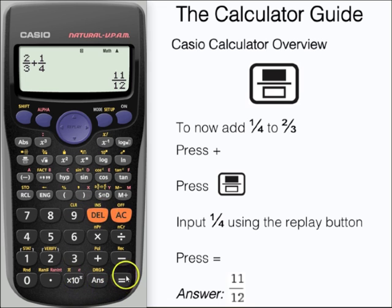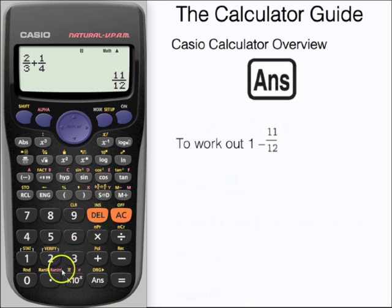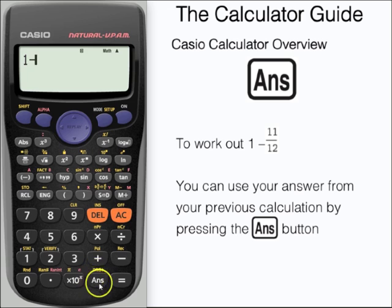We're going to use our answer from this particular calculation in our next calculation. We've got eleven-twelfths stored here in our answer bank. We're going to work out one minus eleven-twelfths but rather than type in eleven-twelfths we're going to use the answer button located here which will use our answer from our previous calculation. Press equals and that should give us our answer.